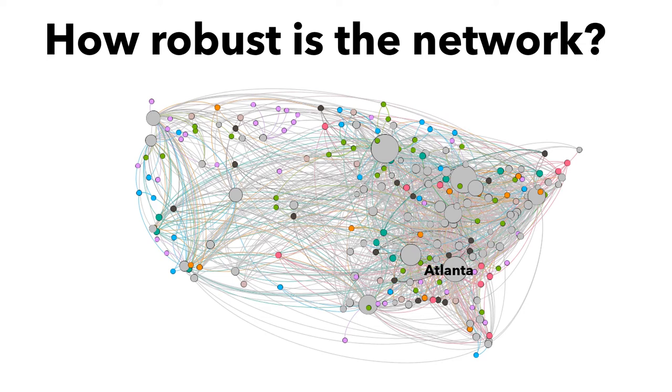In fact, if you want to dismantle a scale-free network, you don't need to attack all hubs. You only need to simultaneously remove as few as 5% to 15% of all hubs, and the network falls apart. Those hubs are too big to fail.